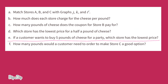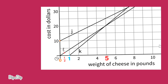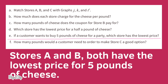If a customer wants to buy five pounds of cheese for a party, which store has the lowest price? Looking at lines J and K, they intersect exactly at the point of five pounds of cheese and twenty dollars. Lines L and K represent Stores A and B, and they both have the lowest price for five pounds of cheese.